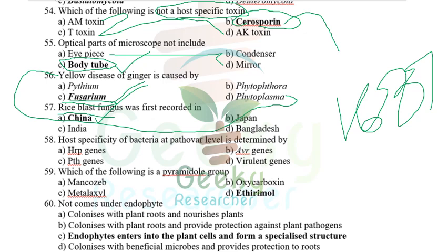Host specificity of bacteria at the pathovar level is determined by — I have no idea. Options included hrp genes, pathogenicity genes, avirulence genes, or virulence genes. I thought it may be pth (pathogenicity) genes, but I'm not sure.